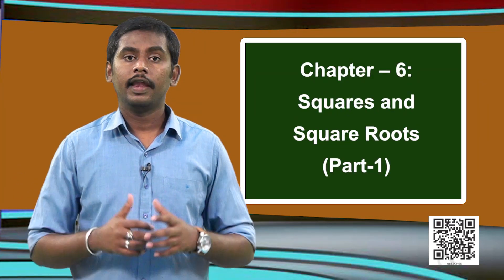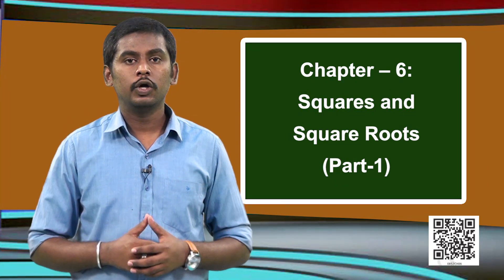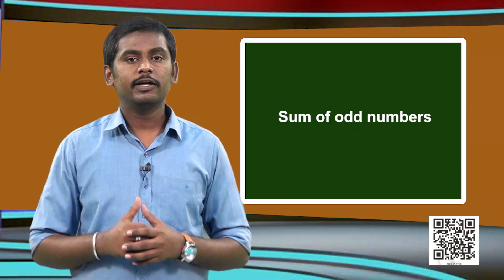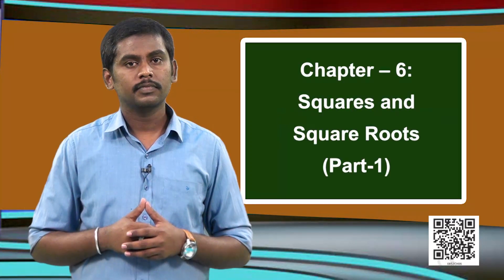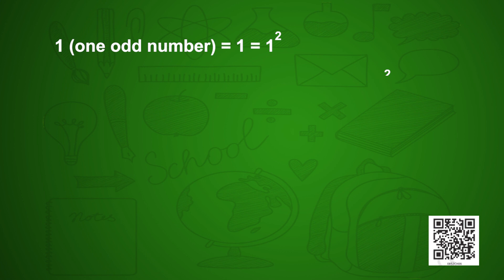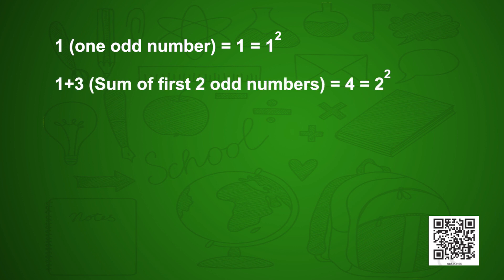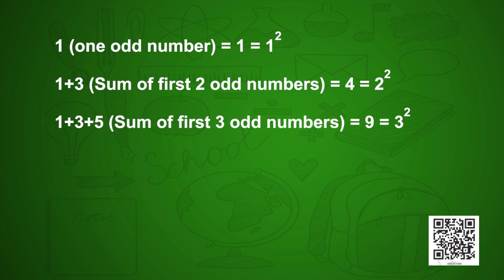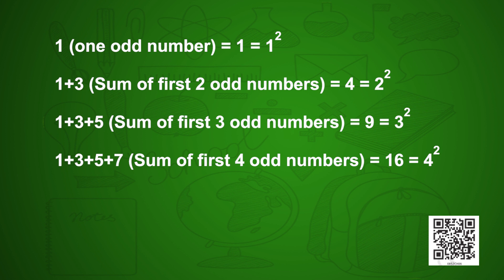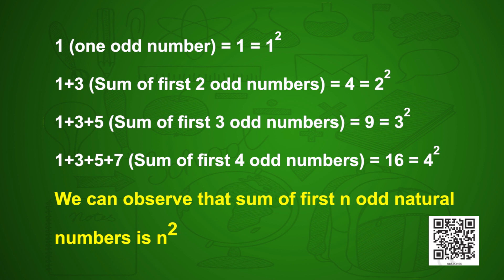Now we are going to see a very important pattern that will be helpful even in higher classes. Let us see the sum of the first odd natural numbers. The first odd natural number is 1, which equals 1 squared. The sum of first two odd numbers: 1 + 3 = 4 = 2 squared. Sum of first three odd numbers: 1 + 3 + 5 = 9 = 3 squared. Sum of first four odd numbers gives 16 = 4 squared. So the sum of first n odd natural numbers is always n squared.